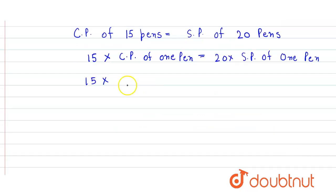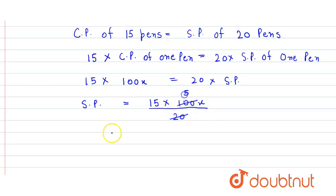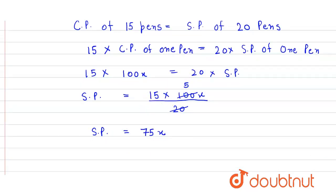So here it is 15 into 100x is equal to 20 into selling price. Now we find out the selling price of one pen. Selling price is equal to 15 into 100x divided by 20. This 20 cancels the 100 giving 5, so the selling price is equal to 15 into 5, which equals 75x.